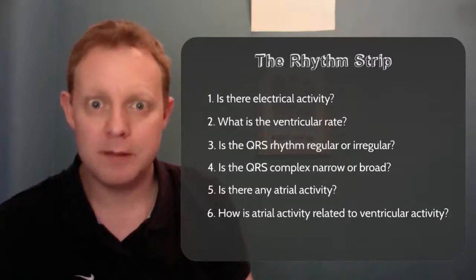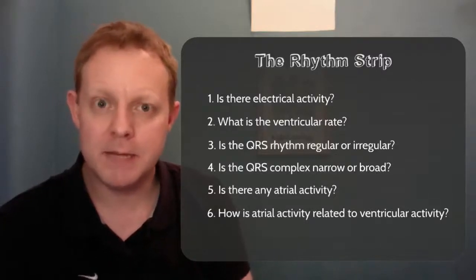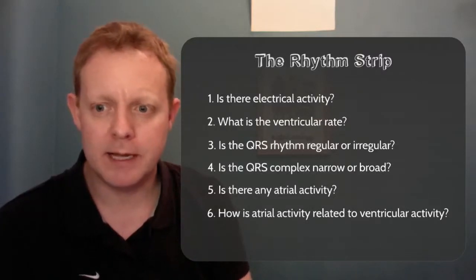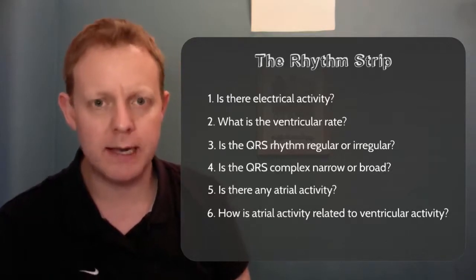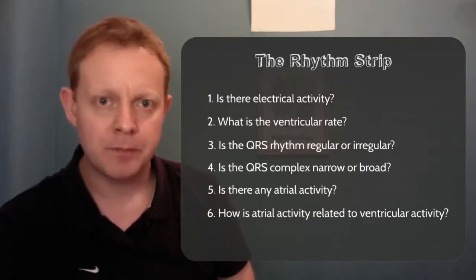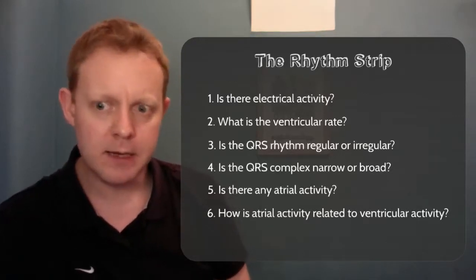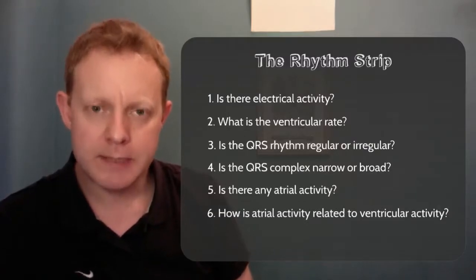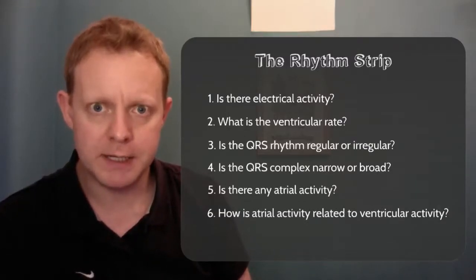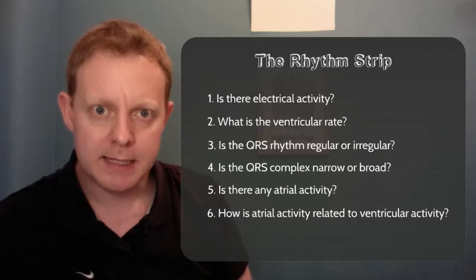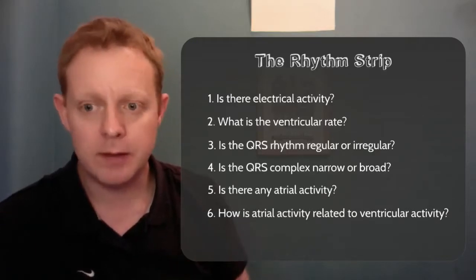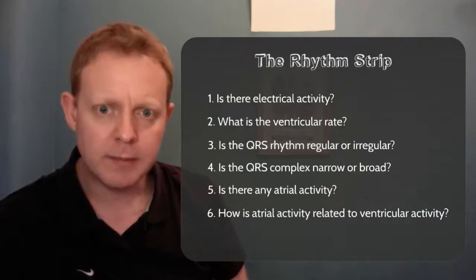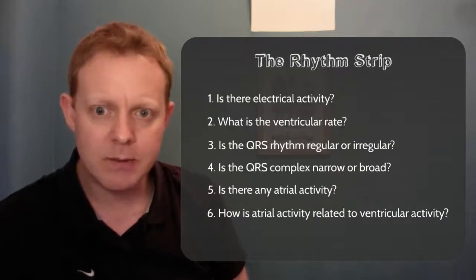Hello and welcome to the third ECG Basics video. This time we're going to look at some ECG rhythm strips. If you didn't see number two in the series, I went through a six-step process for interpreting 12-lead ECGs and a six-step process for interpreting a rhythm strip, and using that you can work out the abnormality on any rhythm strip.